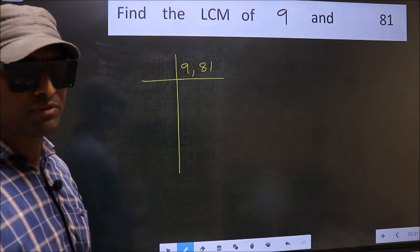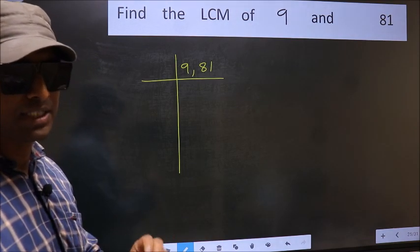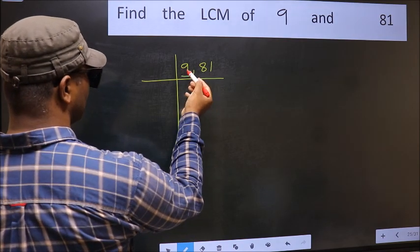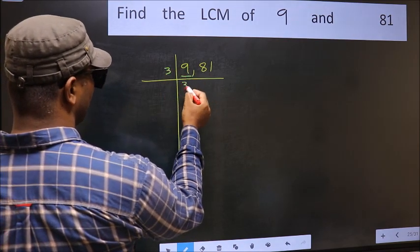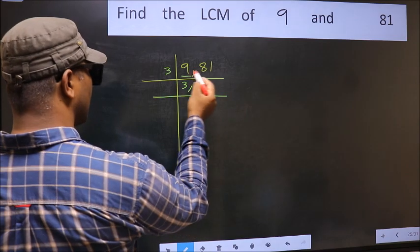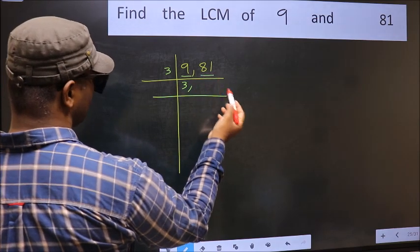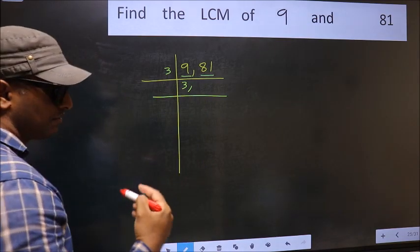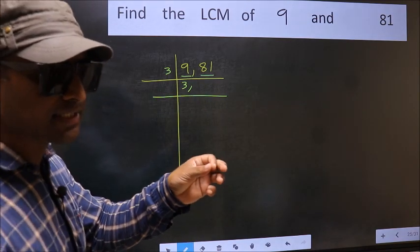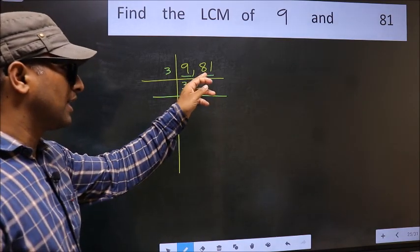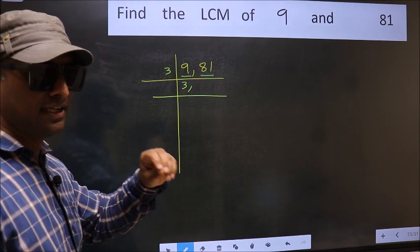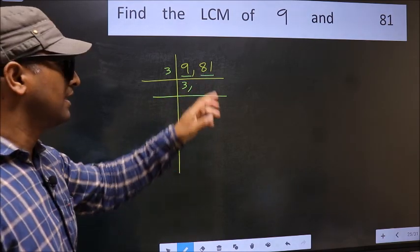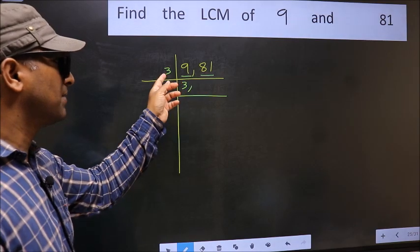Now focus on the first number, which is 9. Now 9 is 3 times 3, which is 9. For the other number 81, check whether 81 is divisible by 3 or not. For that, add the digits: 8 plus 1 we get 9, and 9 is divisible by 3. So this number is also divisible by 3.